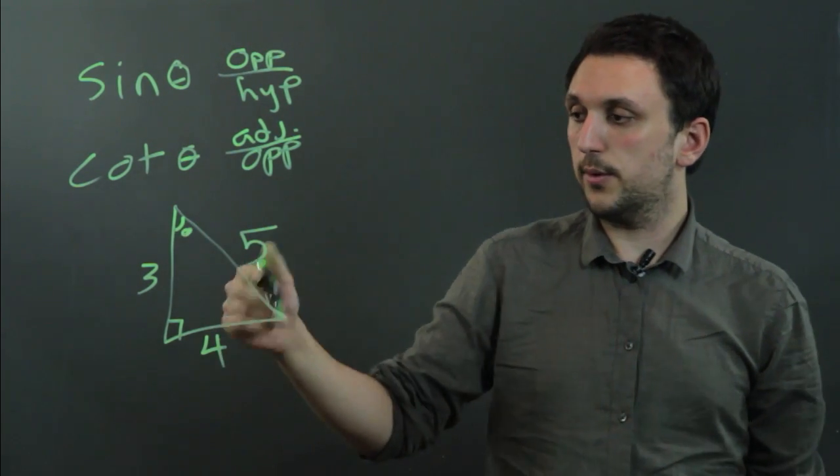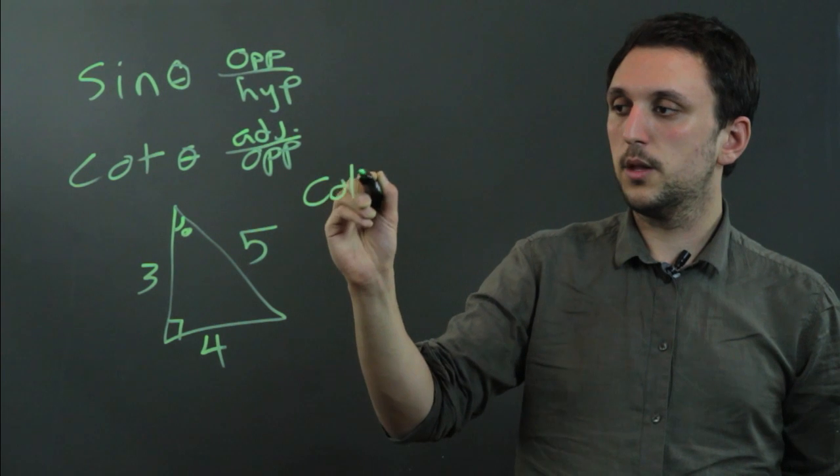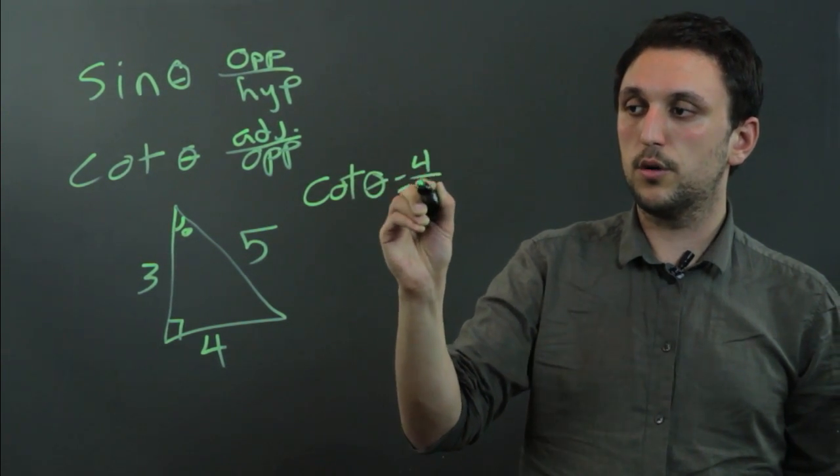So we would say cotangent theta equals 4 over 3.